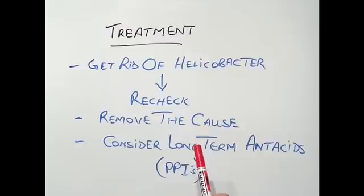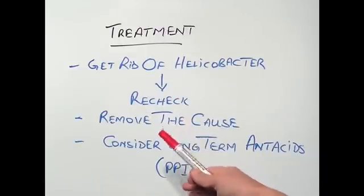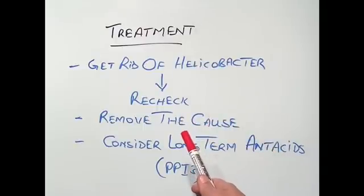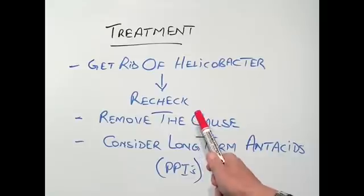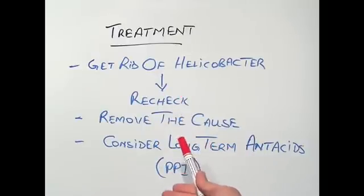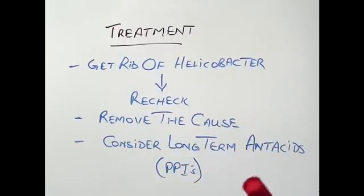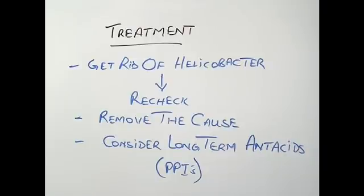Remove the cause — meaning stop what is causing the ulcers, like steroid tablets or anti-inflammatory tablets. If patients must take those tablets for other medical problems, it is wise to give them something to protect the stomach, such as PPIs like lansoprazole, omeprazole, or esomeprazole. If the cause is too much alcohol or spicy food, the way we eat and drink has to change. Smoking certainly stops ulcers from healing and needs to be reduced or stopped altogether, otherwise ulcers tend to come back. Some patients will require long-term antacid tablets — PPIs — possibly for years or even for life.